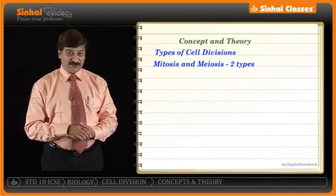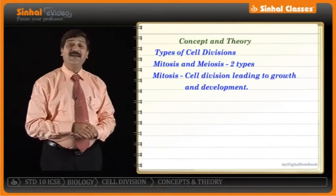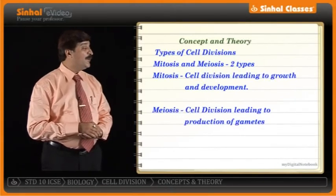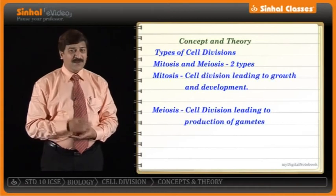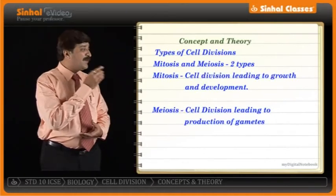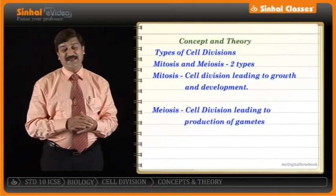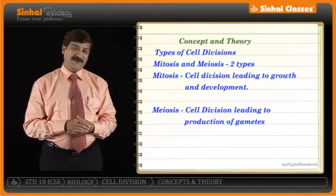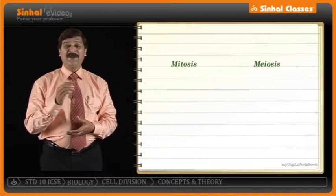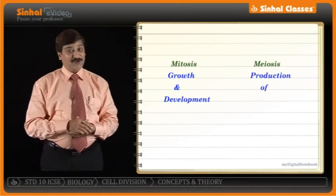On the monitor, the definition of mitosis: mitosis is cell division leading to growth and development. Meiosis is cell division leading to production of gametes. When we use the word gametes, it refers to the reproductive cell; when we talk about growth, it refers to the body cell. So mitosis will be more related with growth and development, and meiosis will be more related with the production of gametes.